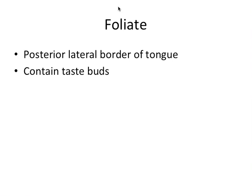Then we have the foliate papilla, the minor type. There aren't that many of them. They're exclusively located on the posterior lateral border of the tongue, which is interesting because the posterior lateral border is a high-risk site for oral cancer — so an inflamed or swollen foliate papilla can often look like something worse. They also contain taste buds.